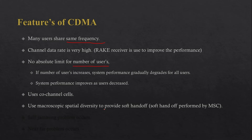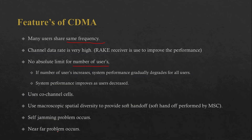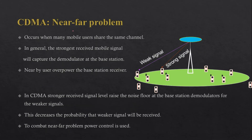CDMA uses macroscopic spatial diversity to provide soft handoff. In soft handoff we have a make-before-break concept, in which the mobile station first makes a connection with another base station, then the handover happens, and then it breaks the connection with the current base station. There are also some issues: the self-jamming problem can occur, and there can also be a near-far problem.